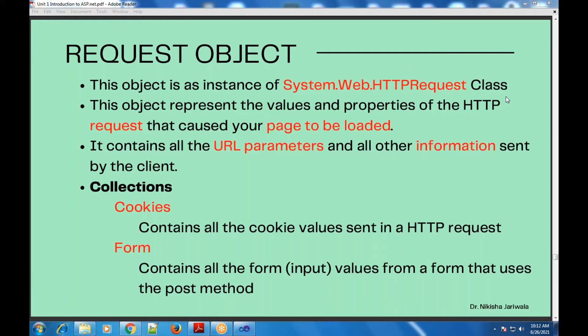There are also other information that the client sends. Since this is a request, obviously the client will send it. So all information that the client sends, along with URL parameter values, we will get inside the request object. So obviously if we can do so many tasks with the help of the request object, it will have collections, properties, and methods.